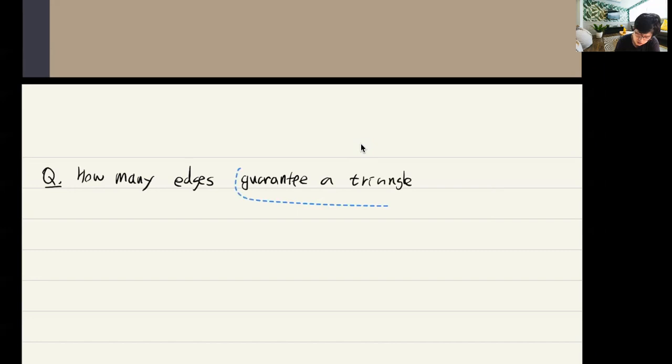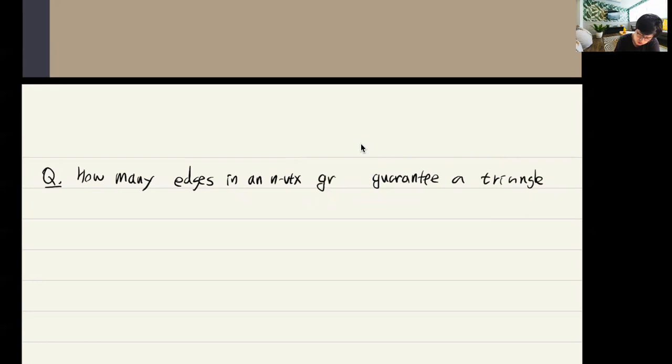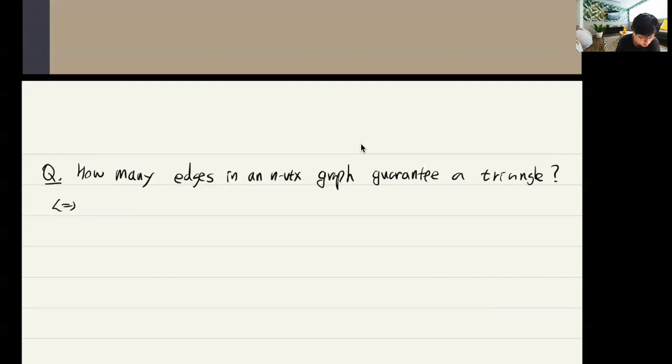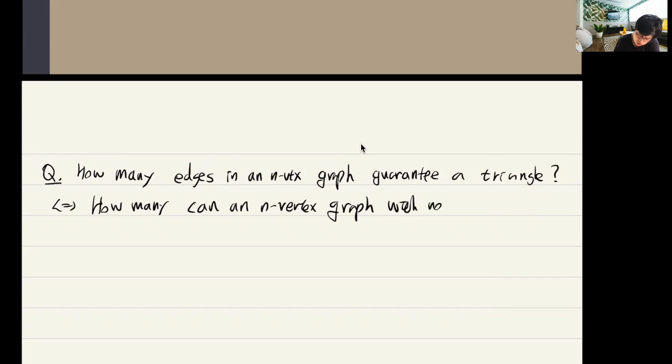How many edges in an n-vertex graph? This is the same as asking: what is the maximum number of edges in an n-vertex graph with no triangle? What is the maximum number of edges?